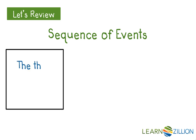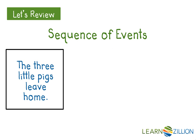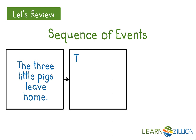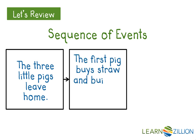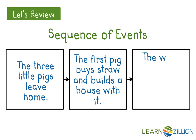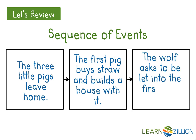For example, at the beginning of the story of the three little pigs, the three little pigs left home. Then, the first pig bought straw and built a house with it. And then, the wolf asked to be let in to the first little pig's house. To make sure our sequence of events continues to make sense, it will be important as we write today to write the events in our story in the same order that we wrote them in our plan.